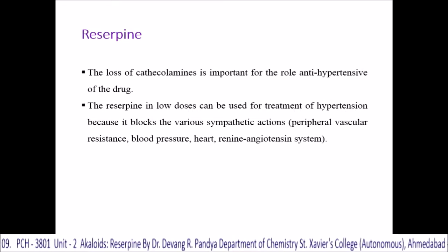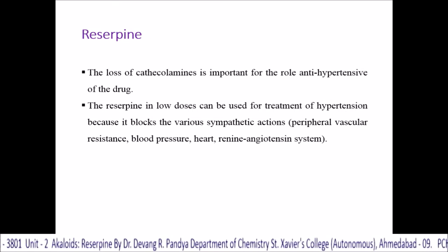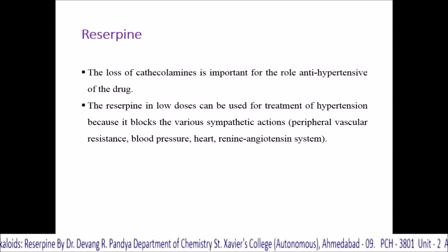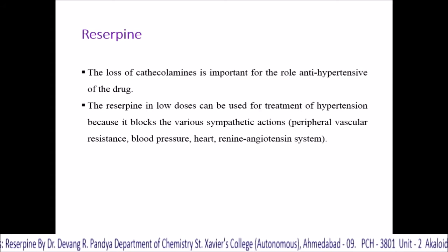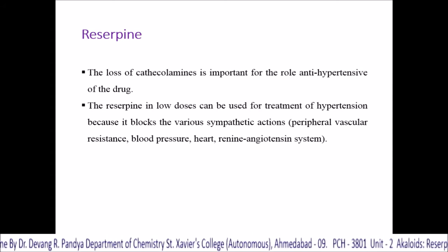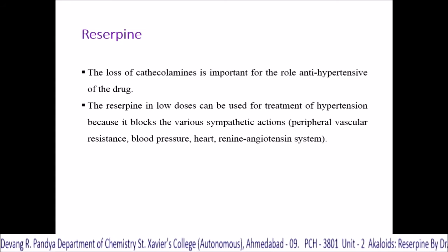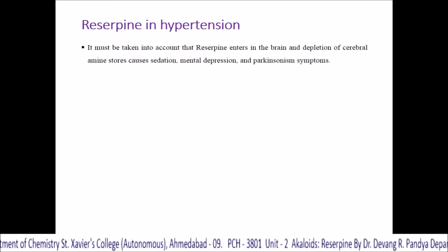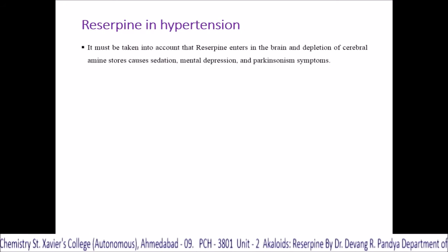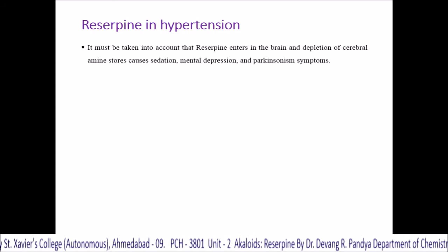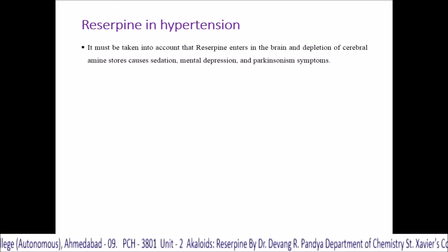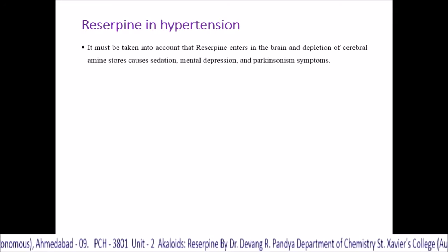In low doses, reserpine can be used for the treatment of hypertension because it blocks various sympathetic actions, including peripheral vascular resistance, blood pressure, heart rate, and the renin-angiotensin system. Reserpine used in hypertension must take into account that reserpine enters the brain, and depletion of cerebral amine stores causes sedation, mental depression, and Parkinsonian symptoms as well.